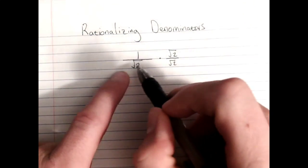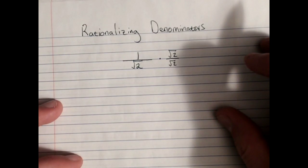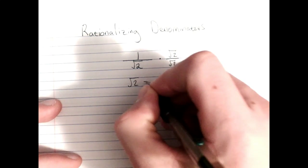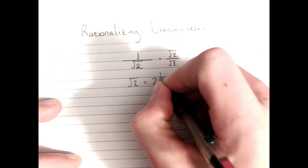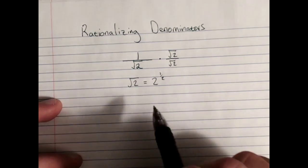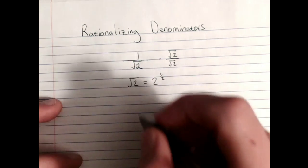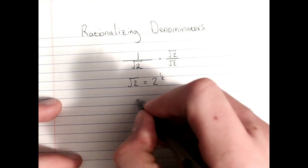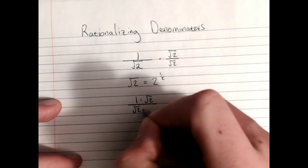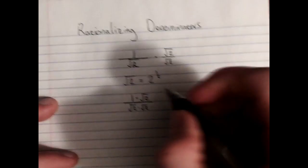Now your instinct is going to be to cancel those, but that's not what we're going for here. Recall that the square root of any number is equivalent to that number raised to the 1 half power. So by multiplying the denominator root 2 by itself, root 2, I'm squaring it. What I've actually got here is 1 times root 2 over root 2 times root 2, and since the square root is raising to the 1 half power...